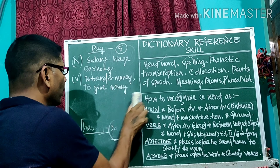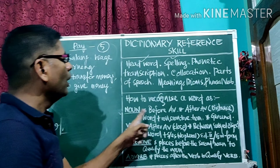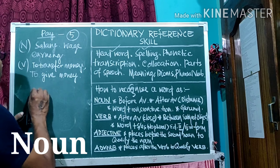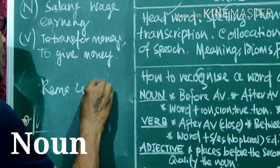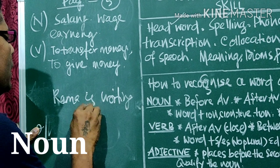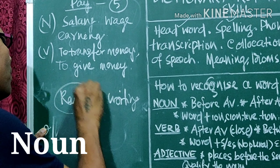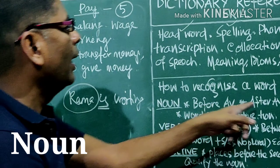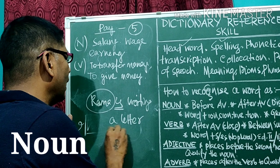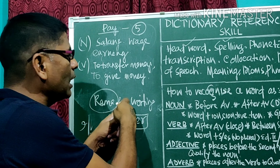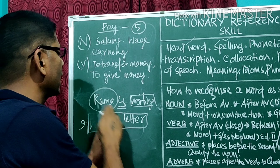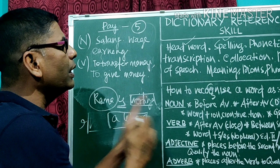How can you identify the part of speech? A noun comes before an auxiliary verb — for example, 'Ramo is' — Ramo is a noun. After an auxiliary verb at a distance, a word can also be a noun — for example, 'Ramo is writing a letter' — 'a letter' is also a noun, as it appears after the auxiliary verb but at a distance.